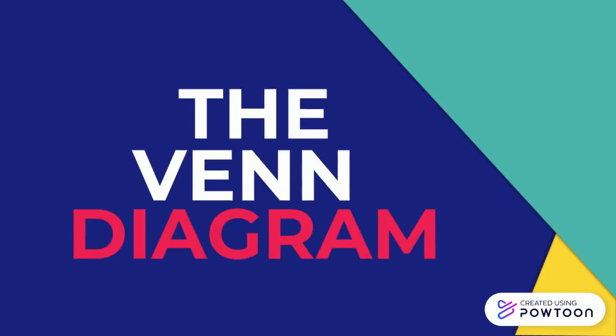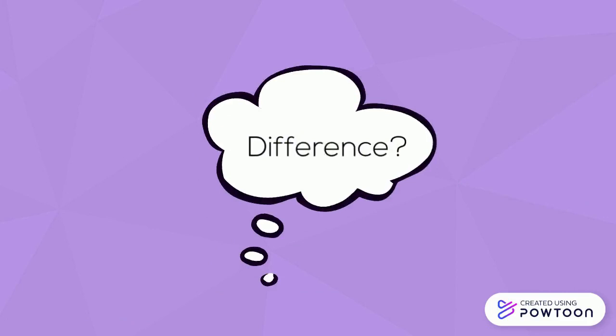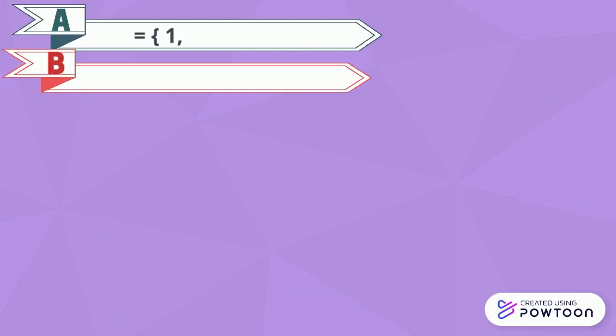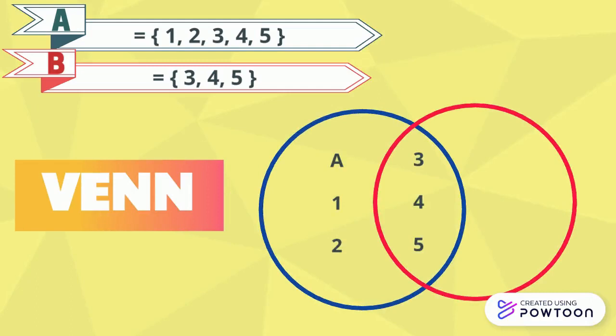The Venn Diagram. Look at these two illustrations — what are their differences? For example, we have set A and B. Set A has elements 1, 2, 3, 4, 5, and set B has elements 3, 4, 5. In Euler's Diagram, it shows the inclusion of B in set A; the circle of set B is inside set A without any room for individual distinction for set B. While in the Venn Diagram, it tries to explain every relationship possible even though it does not exist. We call it a null set when a space has no elements.